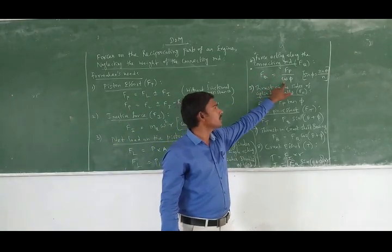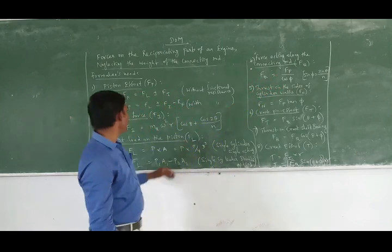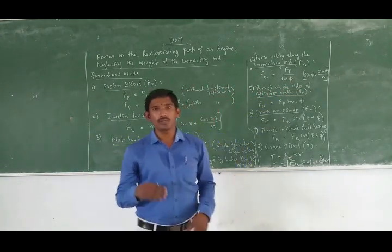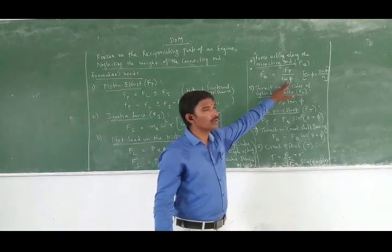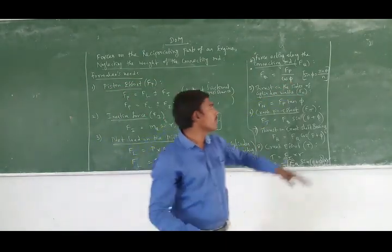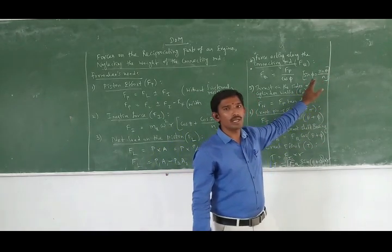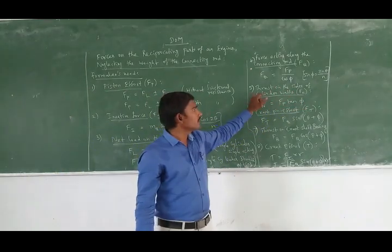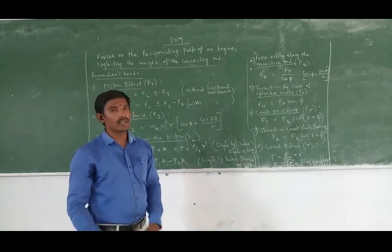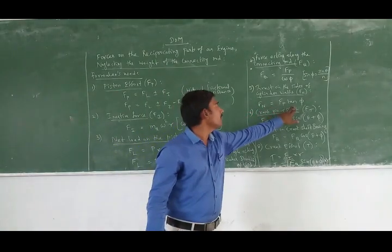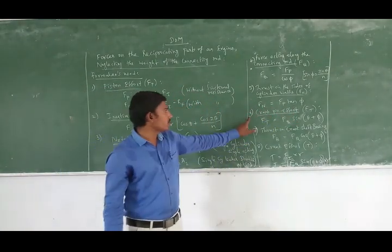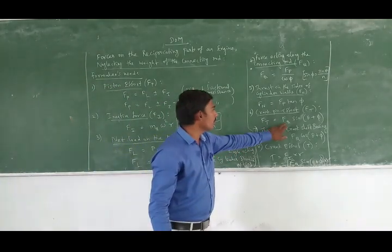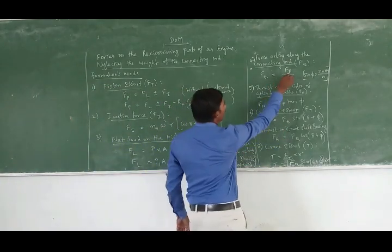Fq is the force along the connecting rod. We can get theta and add phi and find out Fq from FP. Next one is thrust on the sides of cylinder walls, Fn. Fn equals Fq·tan(φ). Next one is the tangential force Ft. Ft equals Fq·sin(θ + φ). Ft is directly put on the crank.